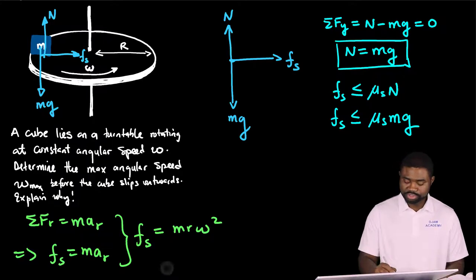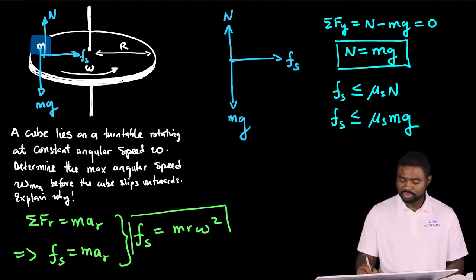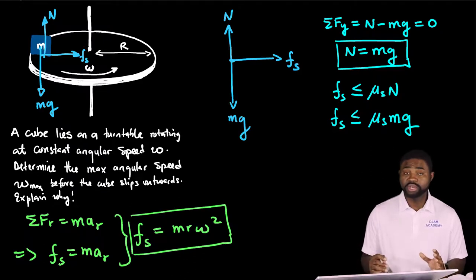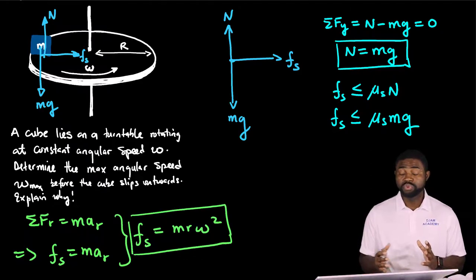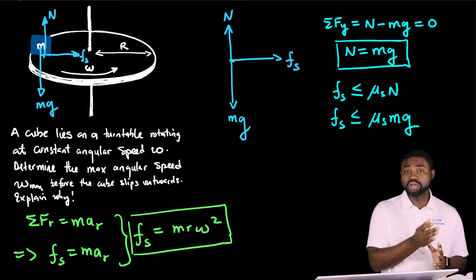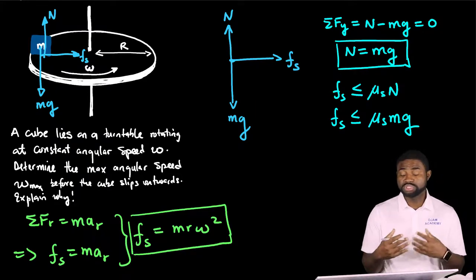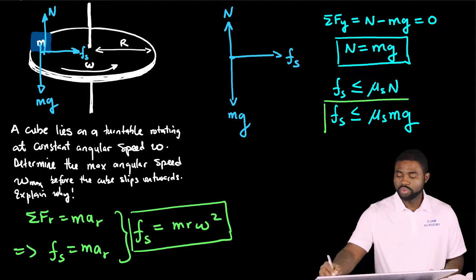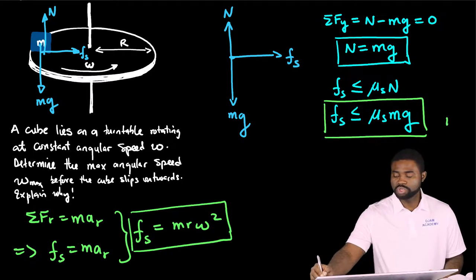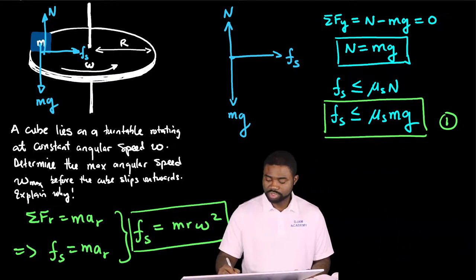Now, there are two equations I would like for you to take a look at, which are very important for you to understand why the cube will skid outwards after we reach a certain value of omega. Let me label this equation 1 and equation 2.